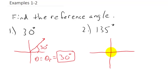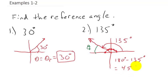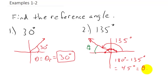Now what about 135 degrees? Our reference angle is measured off the x-axis. To find it, that's going to be 180 degrees minus theta: 180 minus 135 equals 45 degrees. So our reference angle, theta-r, is 45 degrees.